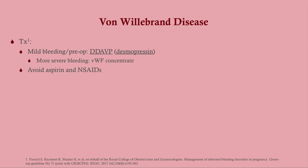Treatment for Von Willebrand's disease: for mild bleeding or pre-operatively, give DDAVP (desmopressin). For more severe bleeding, you can give Von Willebrand factor concentrate — this isn't an option on CCS but you should know it for multiple choice. Also avoid aspirin and NSAIDs, as they further impair platelet function.